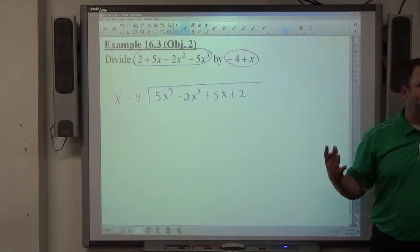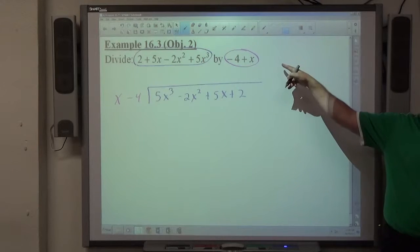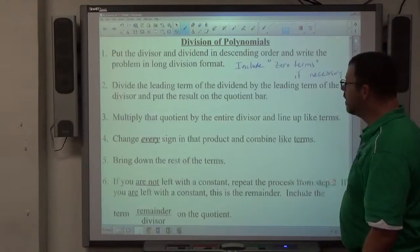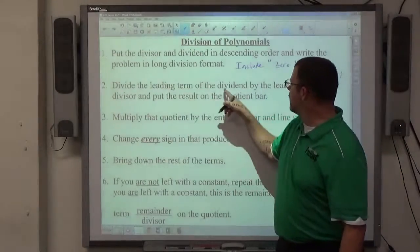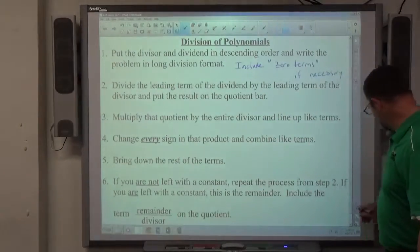That's all step 1 is, setting up the problem correctly. That's how I copy the problem out of my book. That's in my book. This is the first thing on my paper. Second step on your sheet. It says to divide the leading term of the dividend by the leading term of the divisor, put the result on the quotient bar. So let's take a look at what that means.